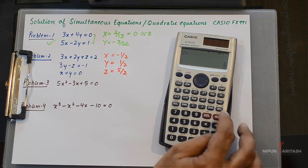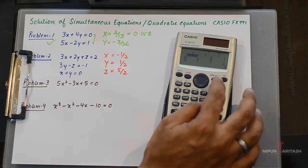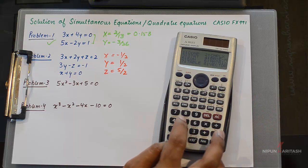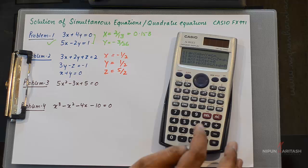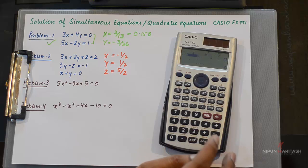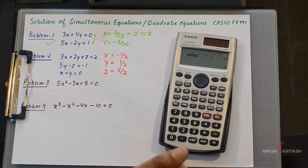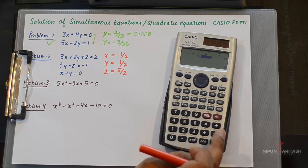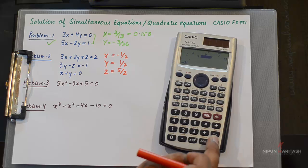That is pretty simple. We can clear this off and go back to equation mode. Now we can proceed with the third one. The coefficient of X² is 5, the coefficient of X is -3, and the constant is 5.